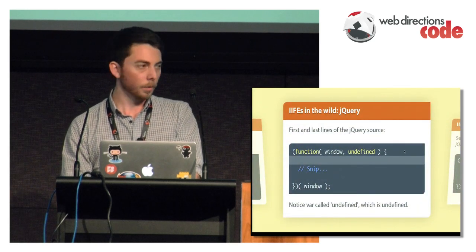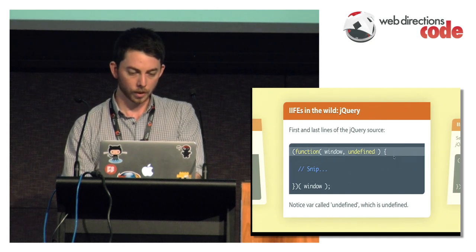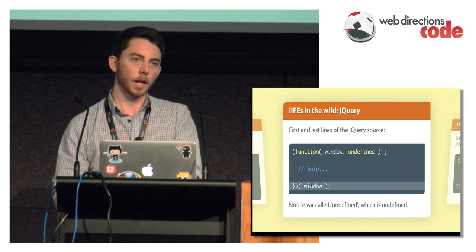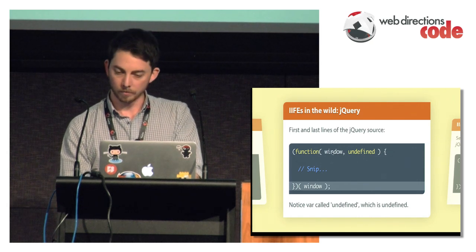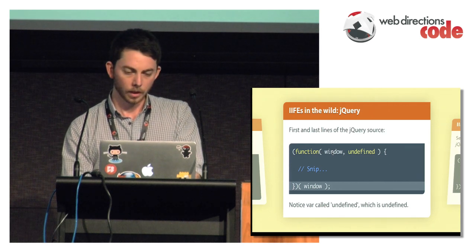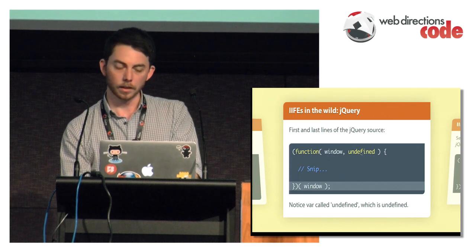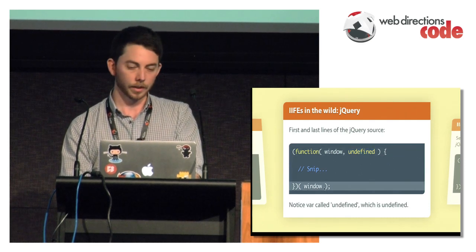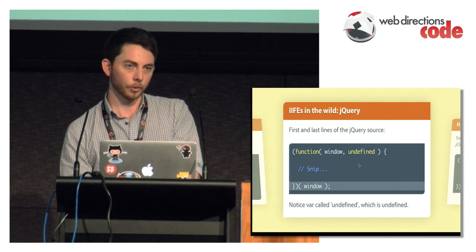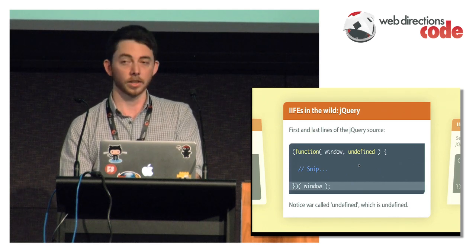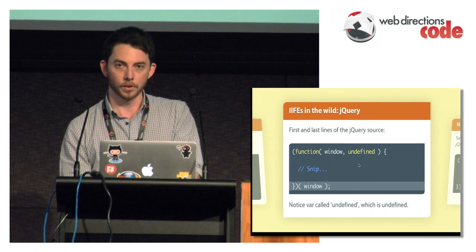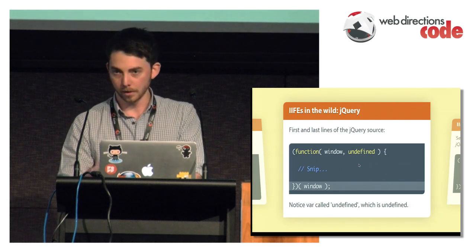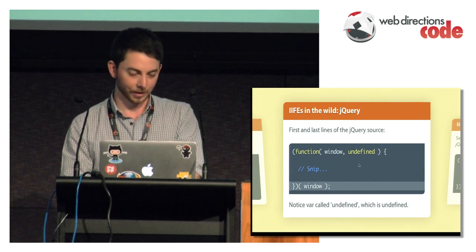You see IIFEs in the wild quite a bit. The first and last lines of jQuery source show the whole thing is wrapped in an IIFE. It passes a reference to window as a parameter, which can be useful for minification and that sort of thing. An interesting thing they do is include a parameter called undefined, which is undefined. They do that because in ECMAScript 3, undefined can actually be changed — a script on your page could say undefined equals true, which is totally valid. That's fixed in ECMAScript 5, but it's an interesting thing to know.